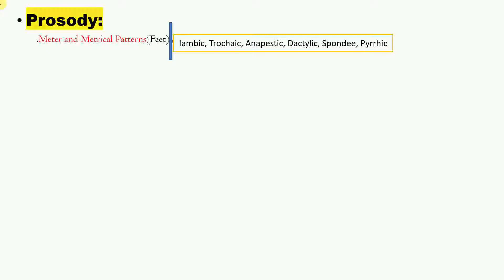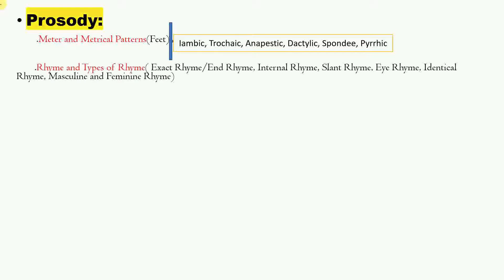Next, you need to understand rhyme and types of rhyme. There are types such as exact rhyme, internal rhyme, slant rhyme, eye rhyme, masculine rhyme, and feminine rhyme. Questions on masculine and feminine rhyme haven't been asked so far but you might expect them since they're very common.